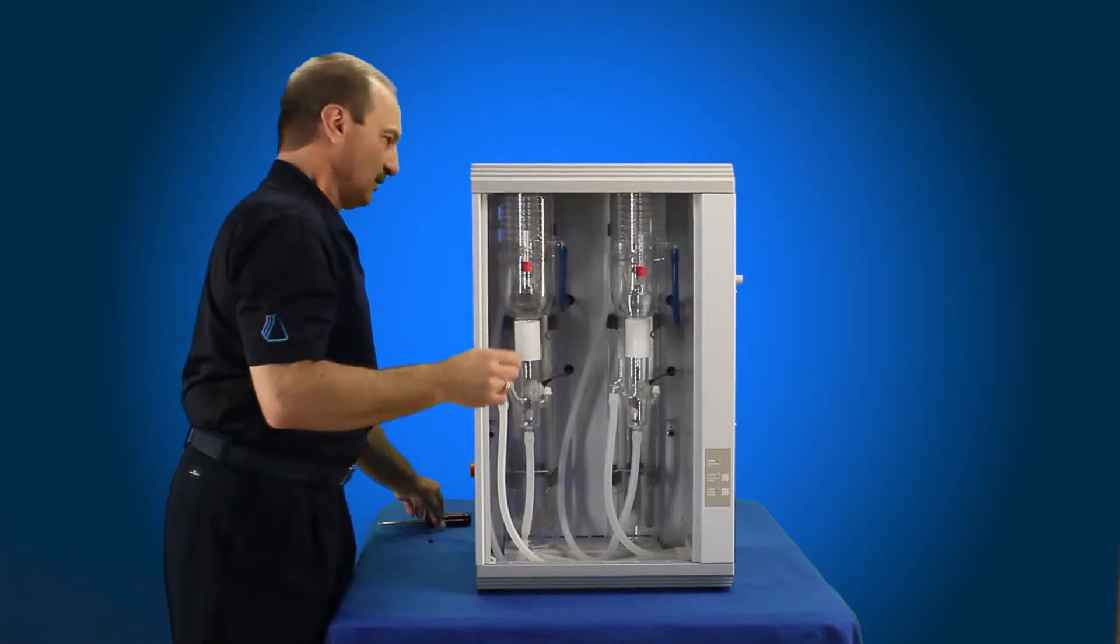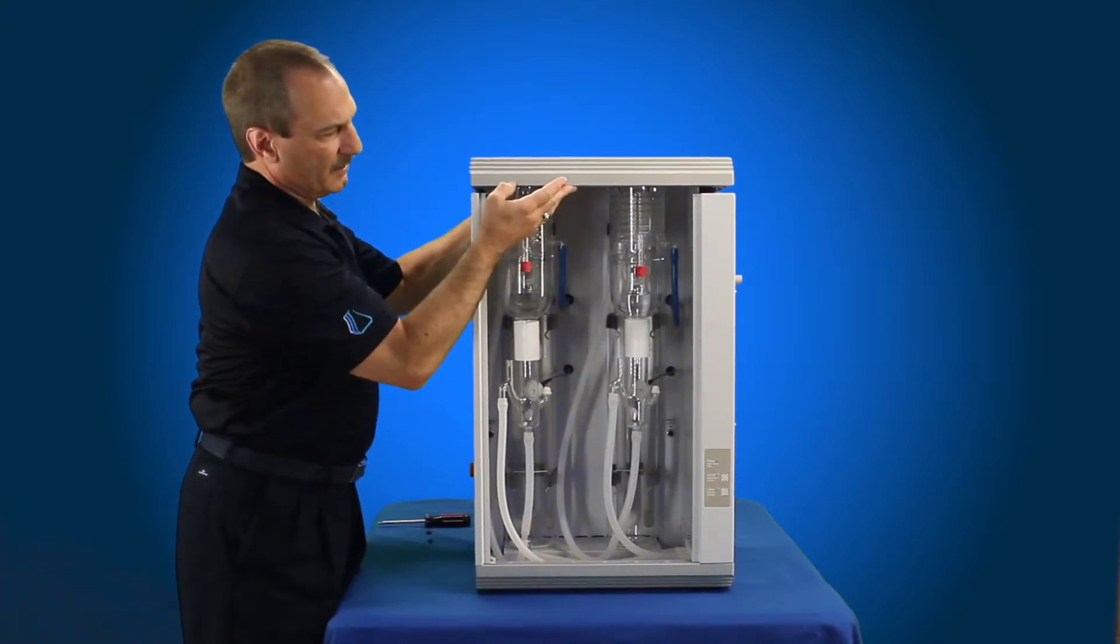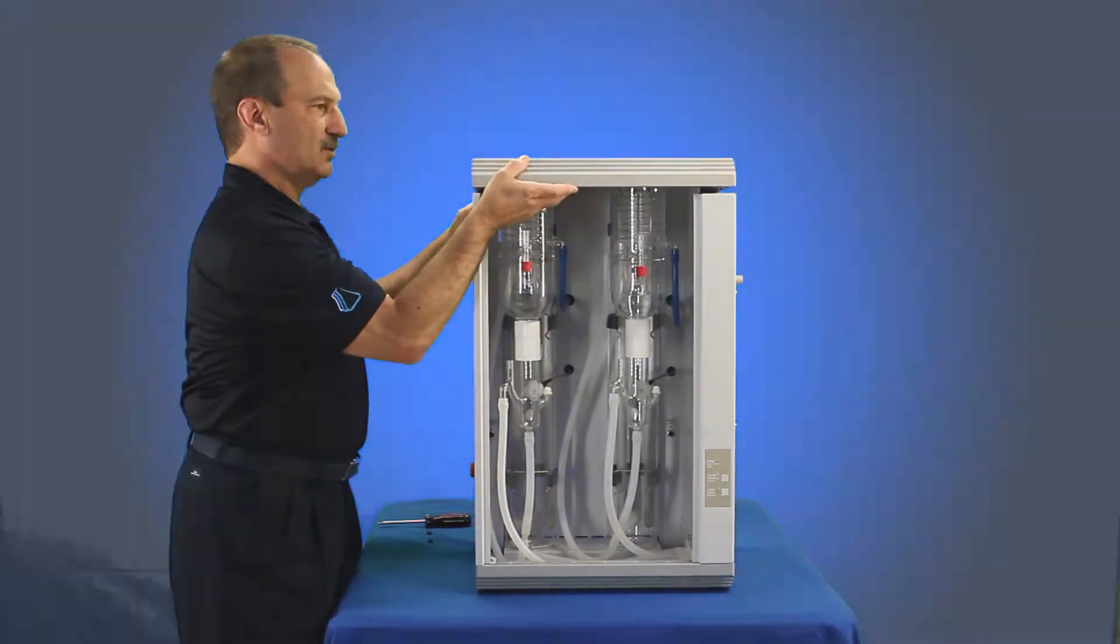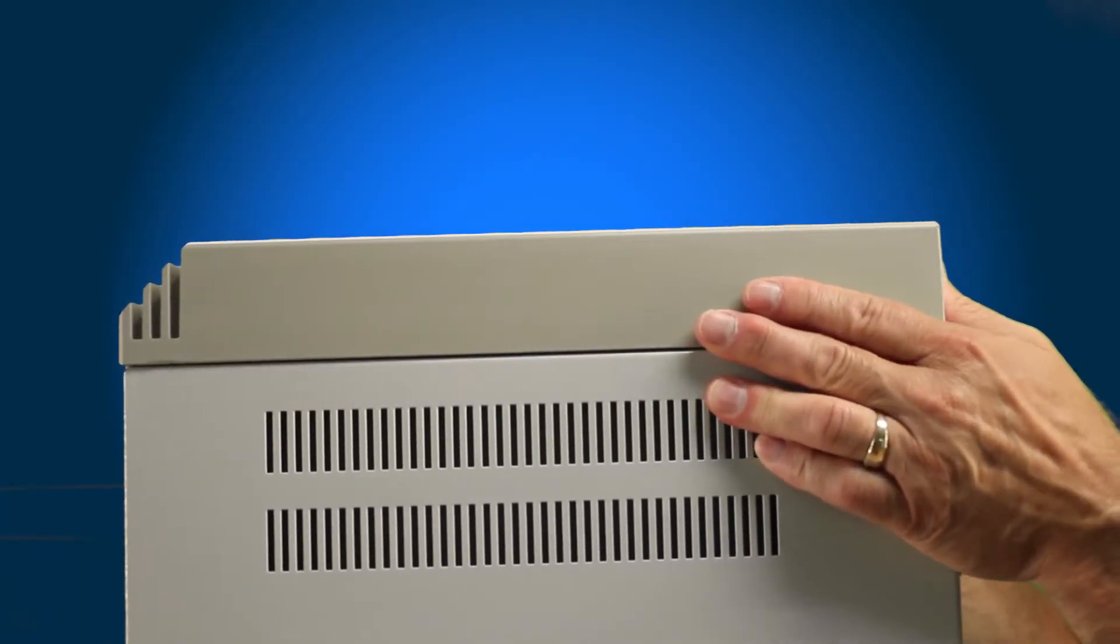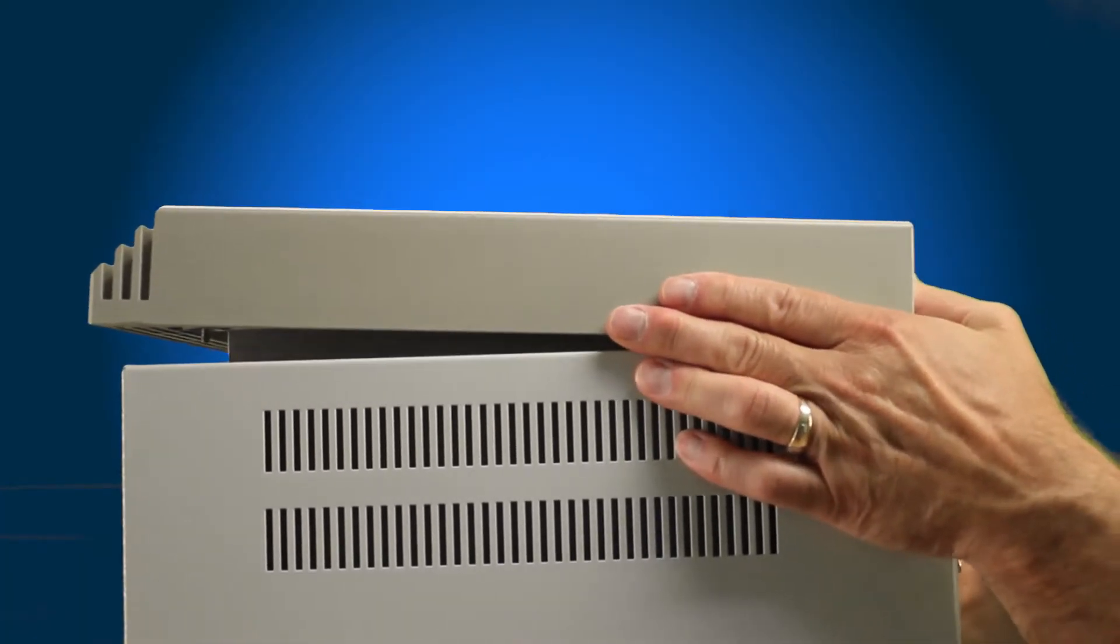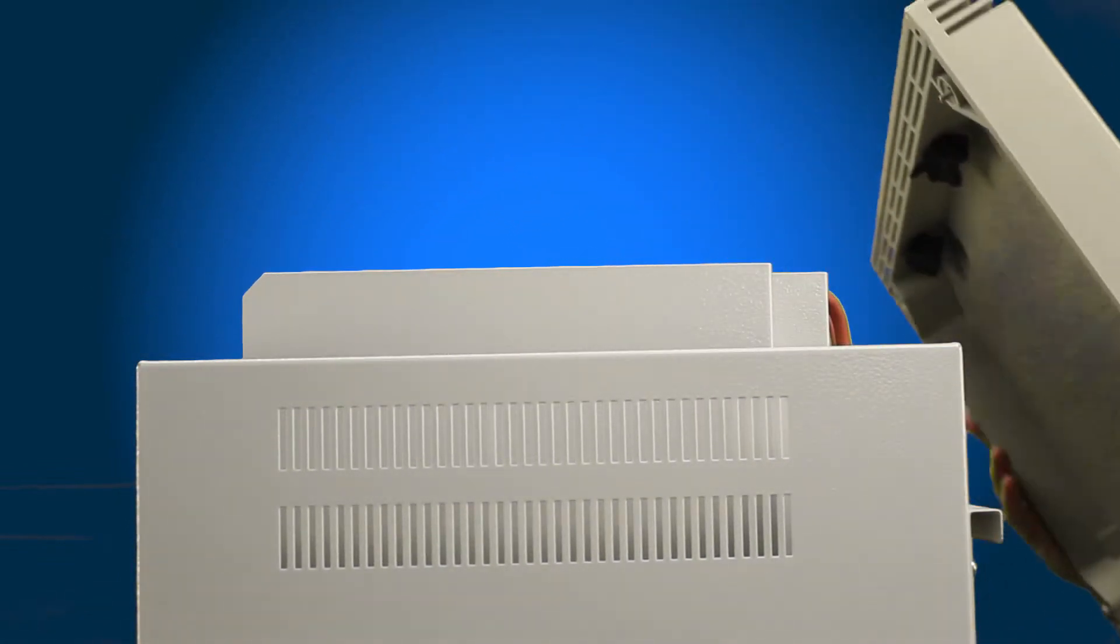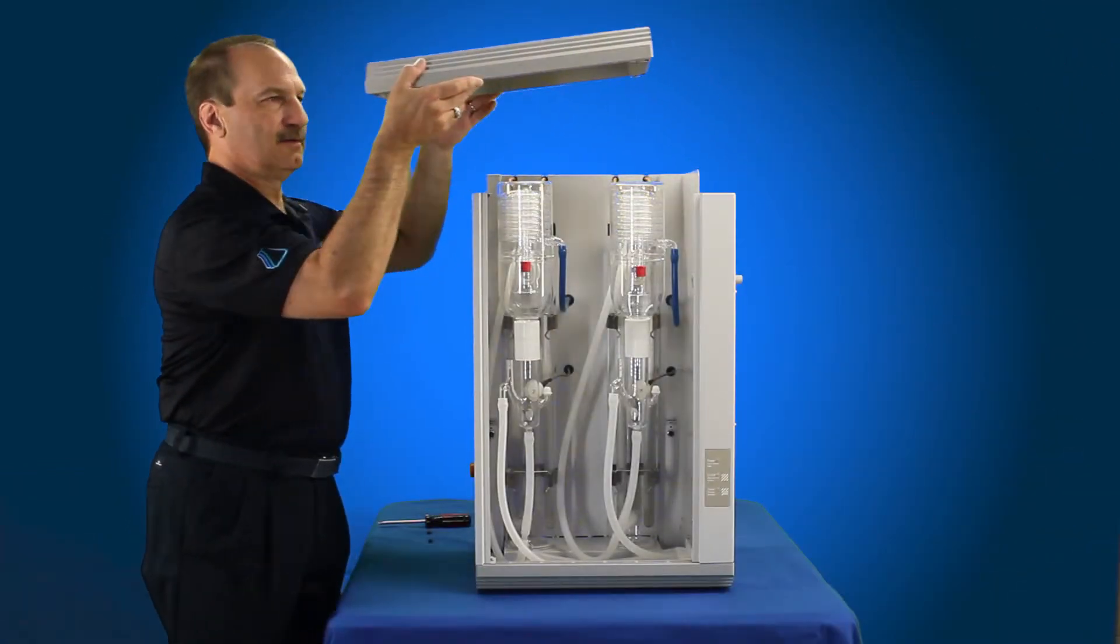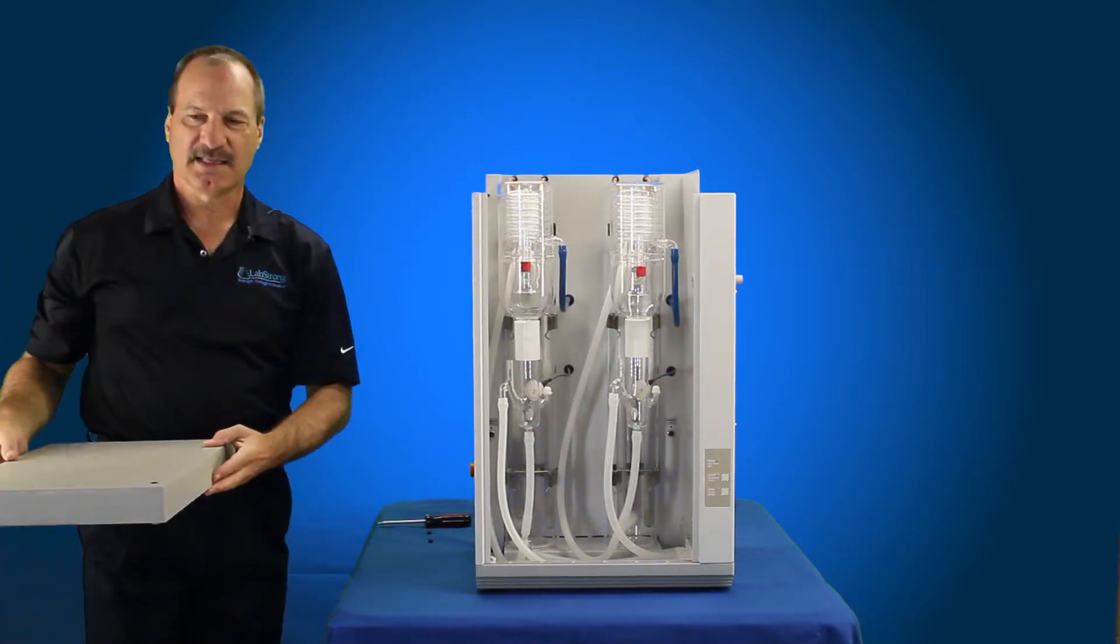Once those are loose, you can pop the front up, and then the back are just two bolts that are elongated and elongated holes. Just slide it ahead until you find the opening. And then pop the top cover off and remove it. Set that aside.